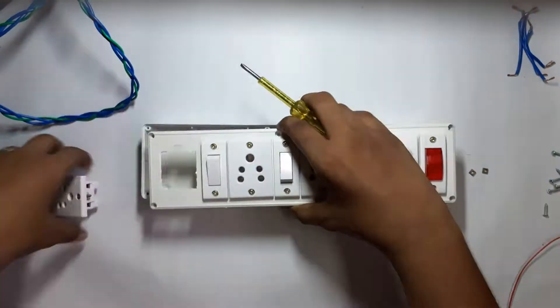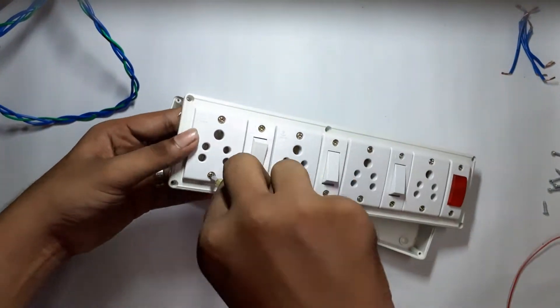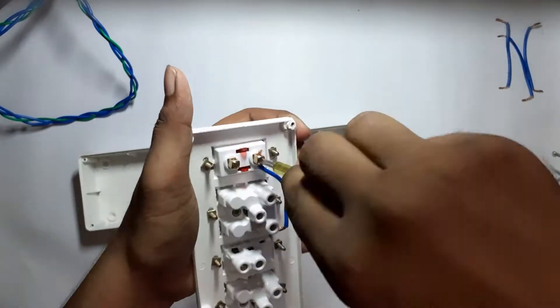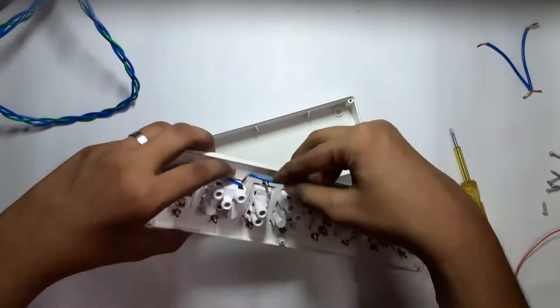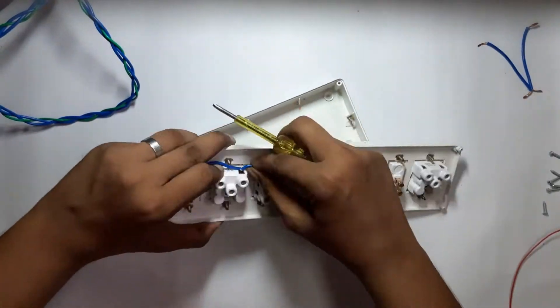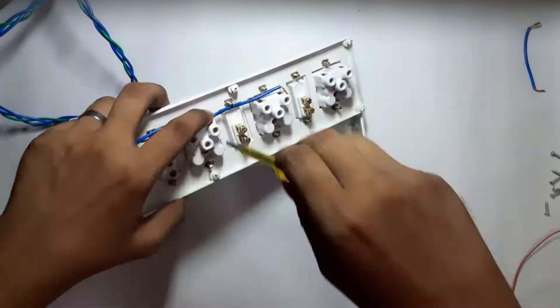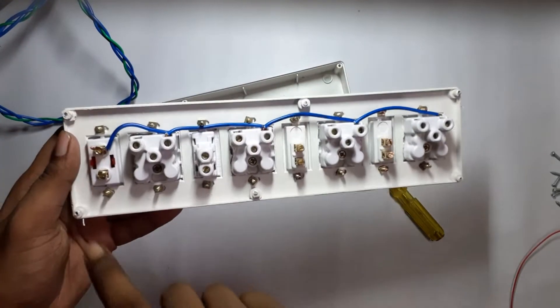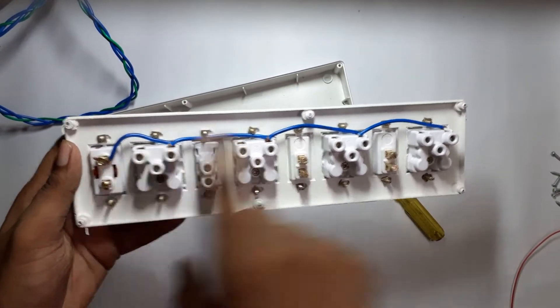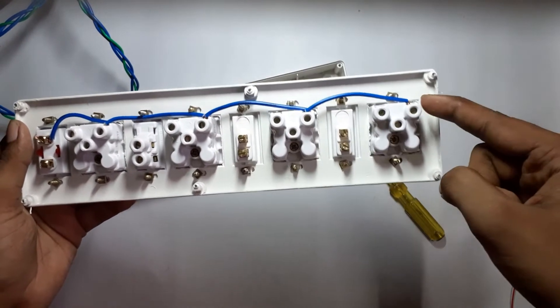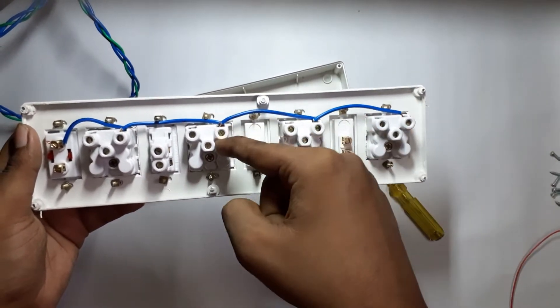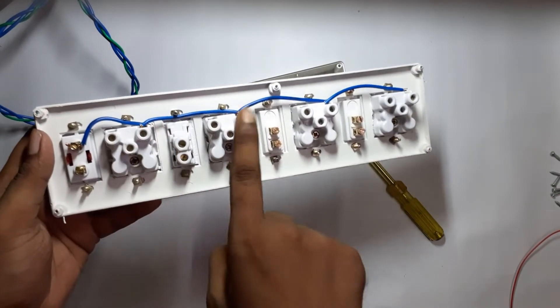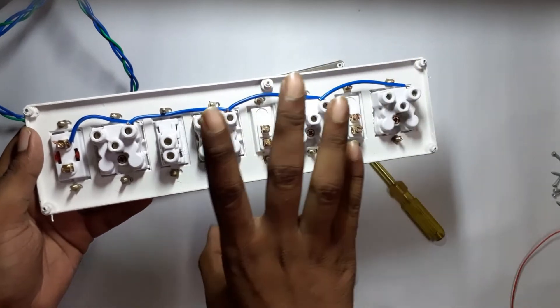Firmly fix the switches and the plugs into the board. Connect all the neutral pins together. The neutral pins are connected from one plug's neutral to another plug's neutral and then to the other. Like this, all the plugs are connected and also to one pin of the indicator.